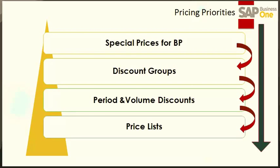Special prices override all other prices because they are the most specific price that can be defined in SAP Business One. It is the first price the system searches for. If a special price for the business partner is not found, then the system will search for the next discount group, then period and volume discounts, and finally for the price list. For a special price to apply on an item in a document, the date must be within the validity period and the unit of measure in the row must match the unit of measure defined in the special price.